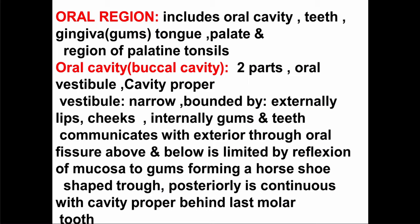The oral cavity, as you all know, is the first part of the GI tract. It contains a number of structures which aid in mastication and chewing of food, and then pushing the food into the oropharynx. The oral region includes the cavity containing the teeth, the gingiva surrounding them, the tongue, the palate, and the region of the palatine tonsils.